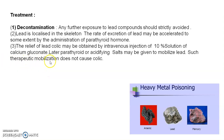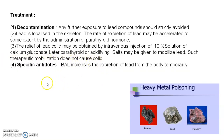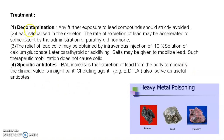Specific antidotes include BAL (dimercaprol), whose full form is British Anti-Lewisite. BAL increases the excretion of lead from the body temporarily, but in lead poisoning its clinical value is considered insignificant. A chelating agent, specifically EDTA, is used in case of lead poisoning and also serves as a useful antidote.